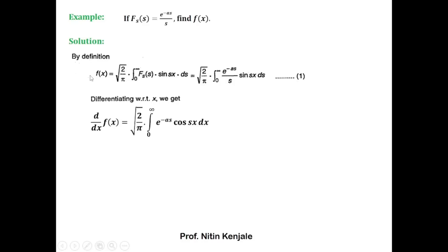Differentiating both sides, the left-hand side becomes f'(x), and the right-hand side is root(2/π) into the integral from 0 to ∞ of e^(-as)/s × sin(sx), differentiated with respect to x. Since e^(-as)/s is constant with respect to x, the derivative of sin(sx) is cos(sx) × s, so the s in the numerator and denominator cancel, leaving the integrand e^(-as) × cos(sx) ds.